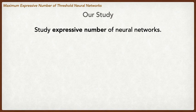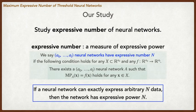We study expressive number. Expressive number is one of the measures of expressive power, defined by a mathematical proposition. It is defined based on the number of training data. Let large N be a natural number. If a neural network can exactly express arbitrary large N data, then the neural network has expressive number large N.